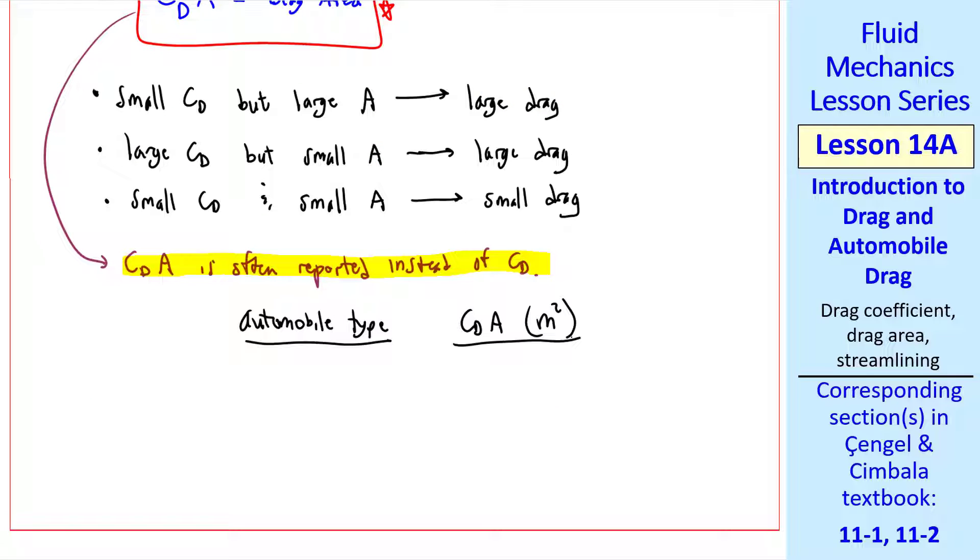I'll make a quick table of automobile type and drag area, which by the way has units of meter squared, since CD is non-dimensional and A is an area. Typical pick-up truck is about 1.5. Typical van is about 1.0. Typical sedan is about 0.6 to 0.9. And a typical sports car has a drag area of about 0.4 to 0.7.